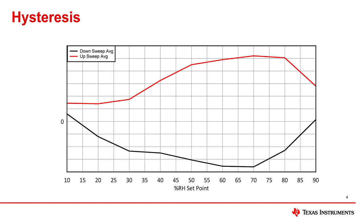In general, hysteresis values are used to specify the maximum difference between pairs of data. This is not a single value and will be different depending on if the humidity is swept up or down.